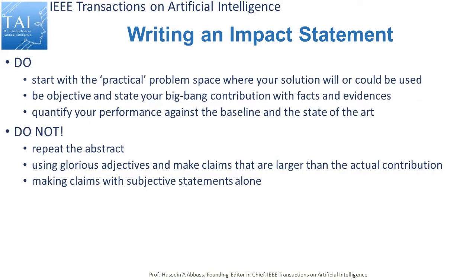Now let me switch to the do's and don'ts. Do start with the practical problem space where your solution will or could be used. For example, you could say something like: 'AI systems are used in courts to assess the risk of a criminal to repeat their crimes. These systems have been found to be biased. We are proposing a solution to this problem.' You can see in this example that the application domain becomes quite clear. Be objective and state your contribution with facts and evidence. Quantify the performance against the baseline — you need to quantify the contribution of your algorithm, method, or methodology.